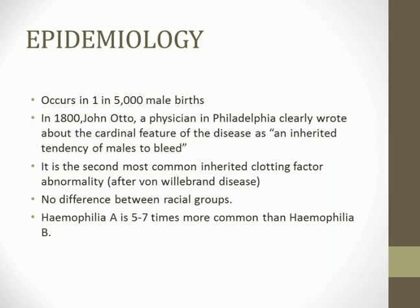Hemophilia mainly occurs in males because females are carriers of the disease. In 1800, physician John Otto clearly wrote that it is an inherited tendency of males — not females — to bleed. It is the second most common inherited clotting factor abnormality, the first being von Willebrand disease, which involves deficiency of both platelets and a clotting factor.